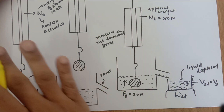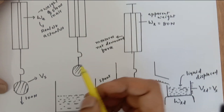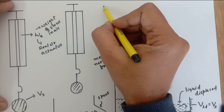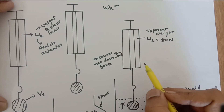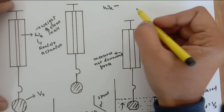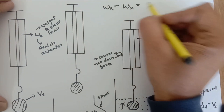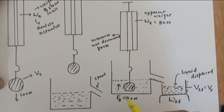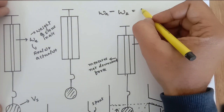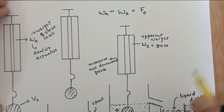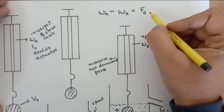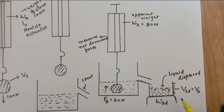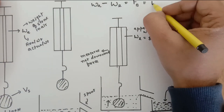As per Archimedes' principle: weight in air minus weight in liquid equals upthrust, that is the net upward force. This buoyant force is also equal to the weight of liquid displaced.